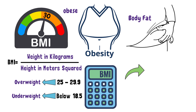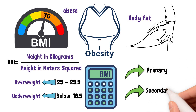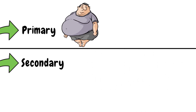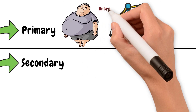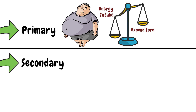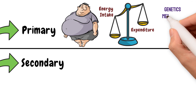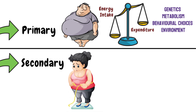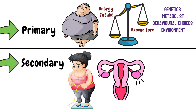There are two types of obesity: primary and secondary. Primary obesity occurs when there is an excess of fat due to an imbalance between energy intake and expenditure. This can be due to many factors, including genetics, metabolism, behavioral choices, and the environment. Secondary obesity occurs when there is another underlying condition that leads to weight gain, such as polycystic ovary syndrome or Cushing's disease.